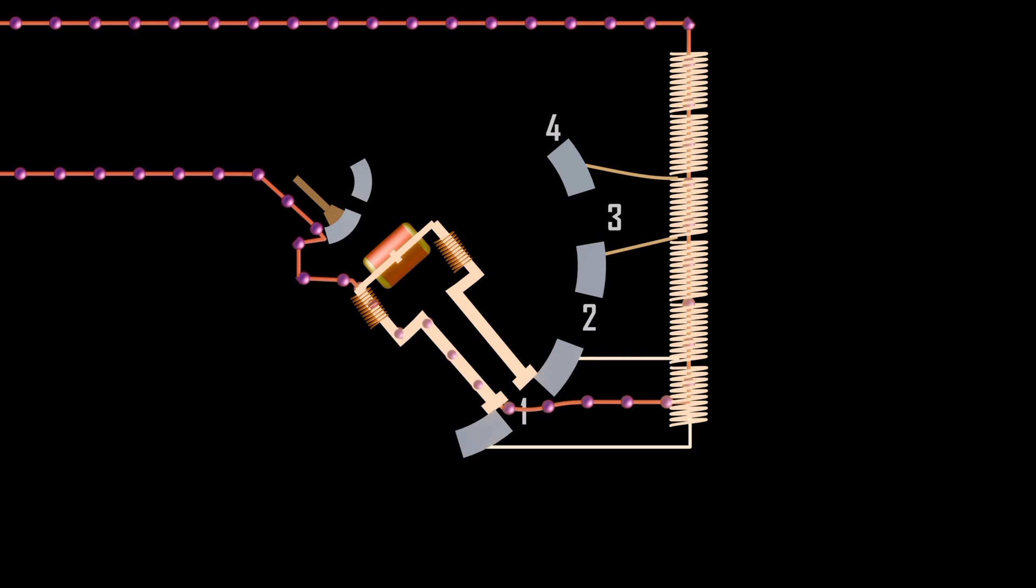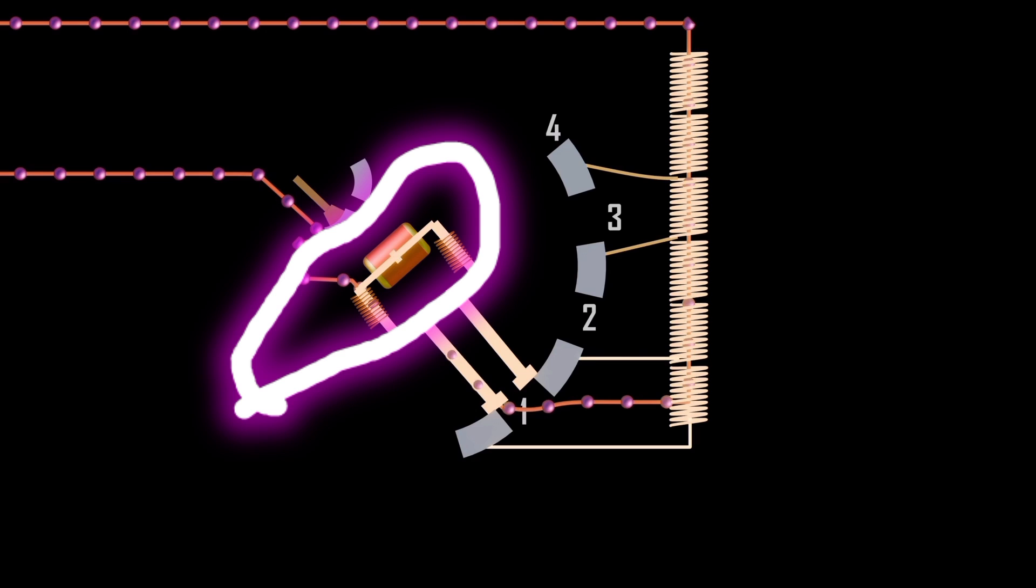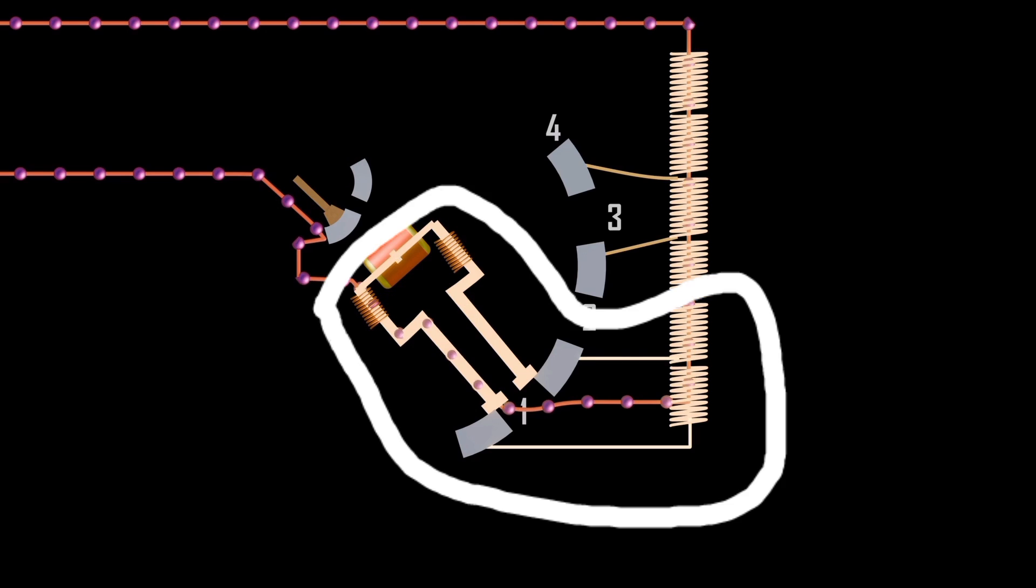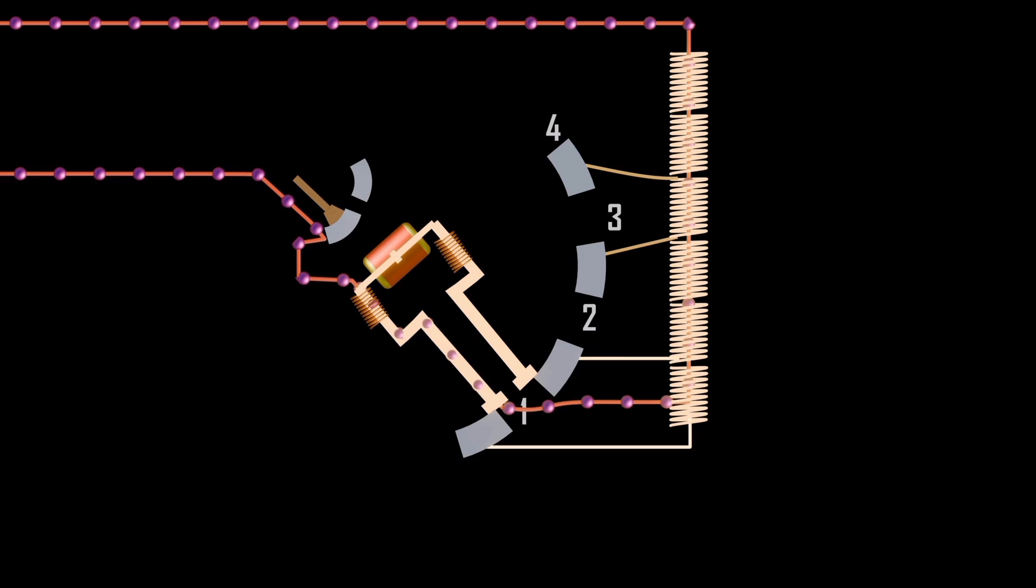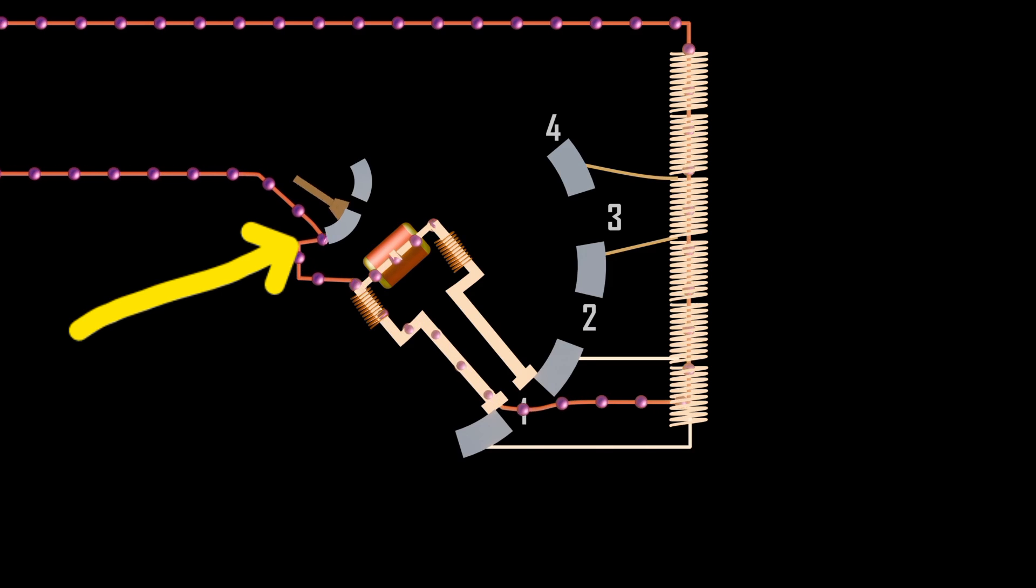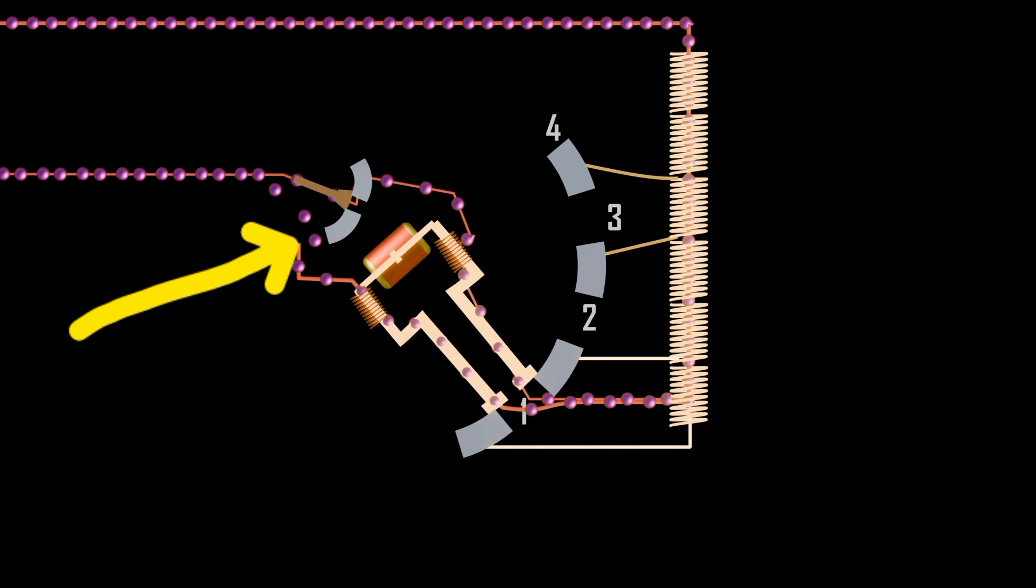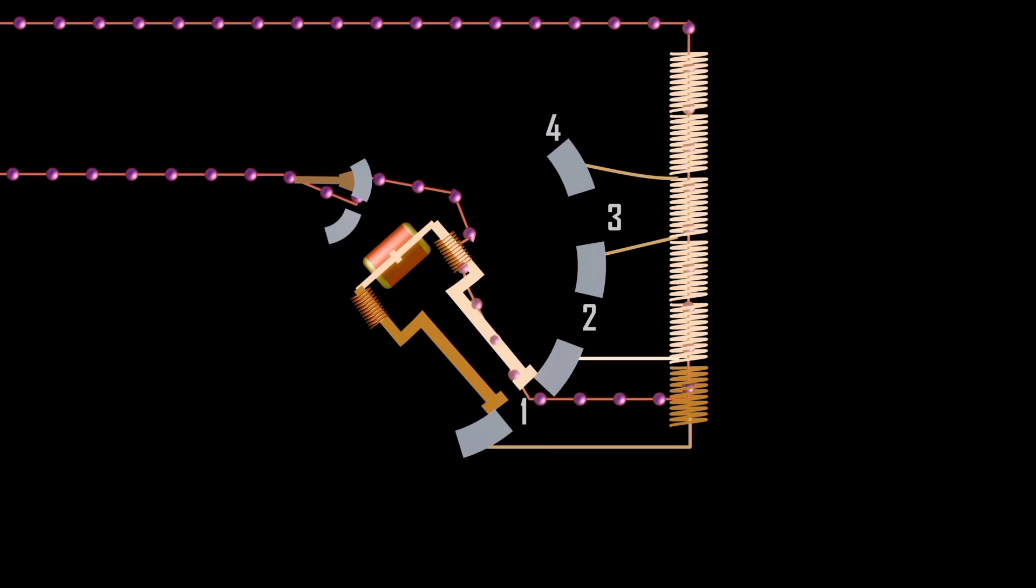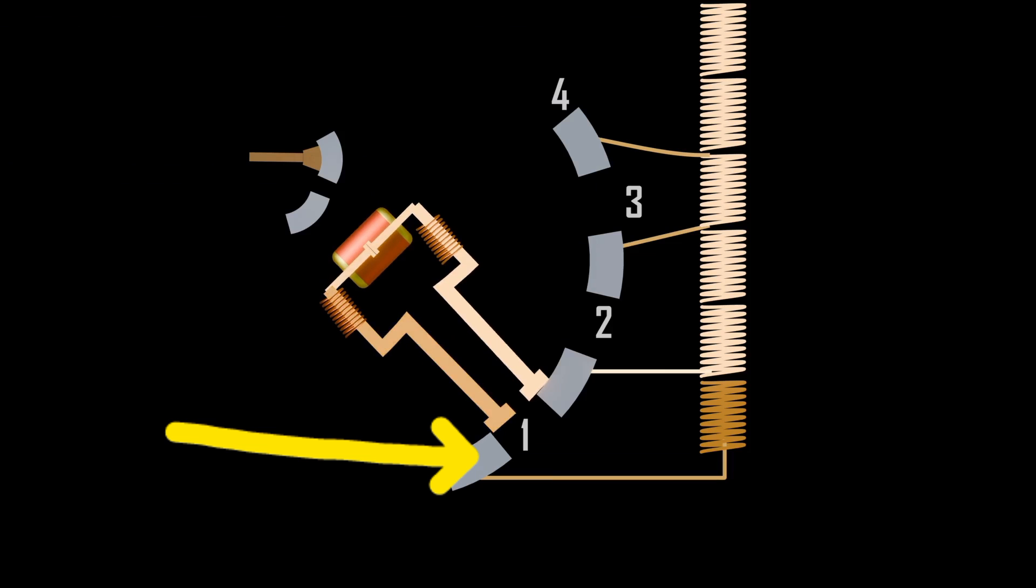Now we close the vacuum switch, therefore forming a loop between coil one, coil two, selector contacts and vacuum switch. Now since the vacuum switch is closed, we can safely turn the bypass switch to the other contact, energizing the other side of the selector switch. Now we can turn the selector switch to tap two, and then open the vacuum switch.